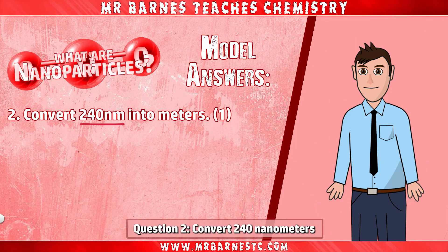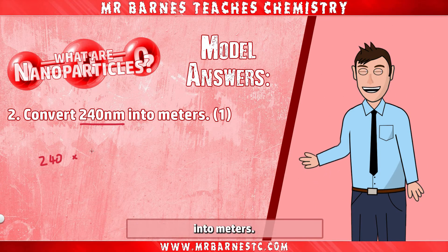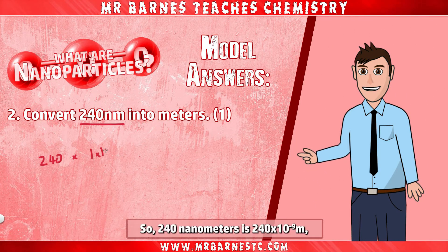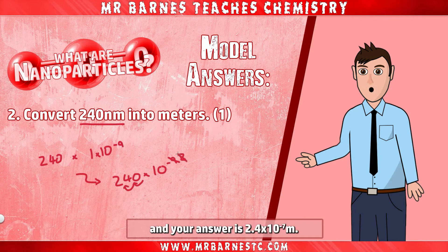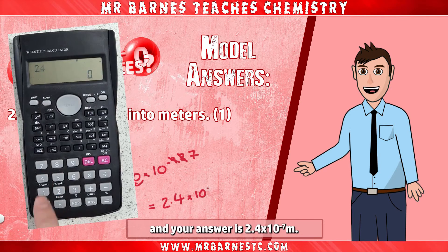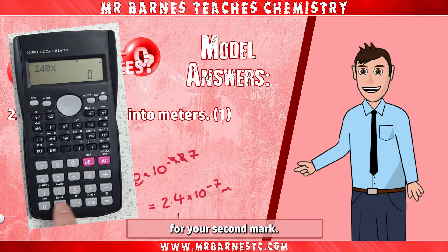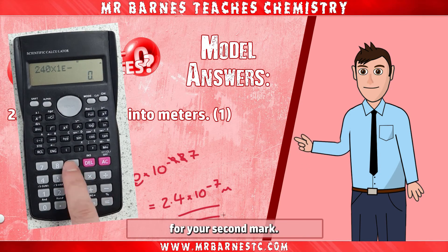Question 2: convert 240 nanometers into meters. So 240 nanometers is 240 times 10 to the minus 9, which we can simplify down, and your answer is 2.4 times 10 to the minus 7, for your second mark.